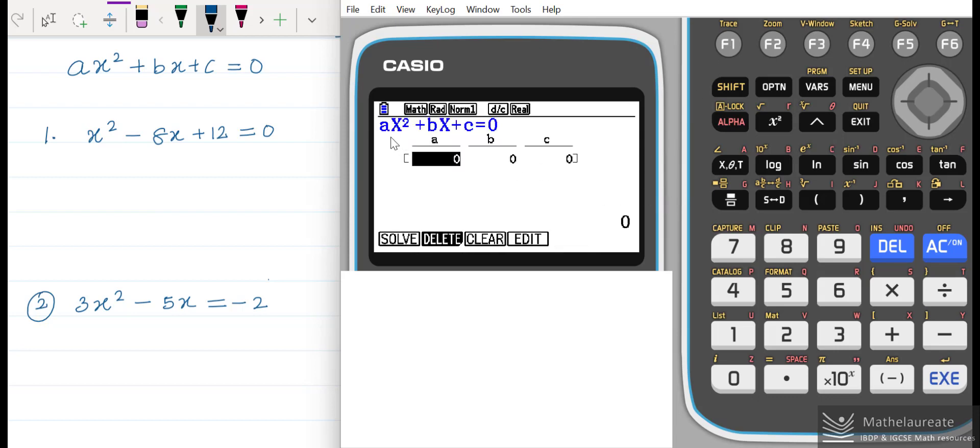Quadratic equation, the general form is ax squared plus bx plus c equal to 0. We also need to convert or make sure that the quadratic equation is in this form before we are entering the values in this template.